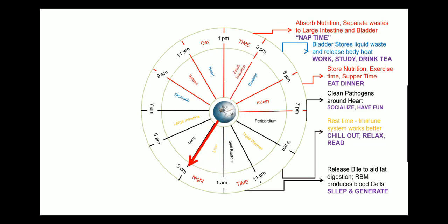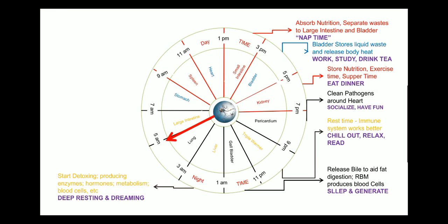Between 1 am to 3 am is the time for the liver. The liver is involved in detoxification and synthesis of various nutrients, hormones, and enzymes, as well as metabolism and destruction of old blood cells. This period is considered deep resting and dreaming time. Between 3 am to 5 am is the lung time, where the lungs are also involved in detoxification. During this period there is deep sleep and blood pressure is lower. If any alteration occurs in the lung or liver periods, the detoxification process in the body can be abolished, leading to various chronic disorders.